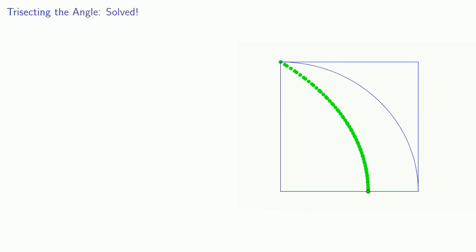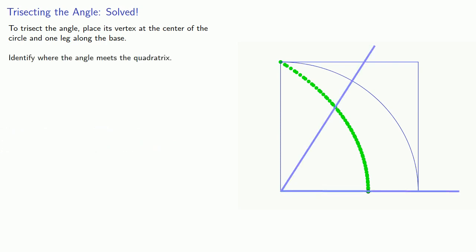So the quadratrix can be used to trisect the angle. To trisect an angle, let's place the vertex at the center of the circle and set one leg along the base. We'll identify where the angle meets the quadratrix, and the point on the quadratrix where one-third of the height will be a point on the trisected angle.